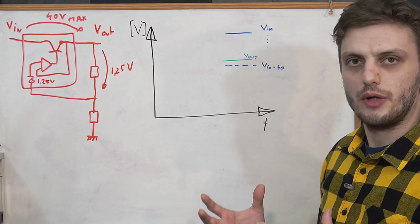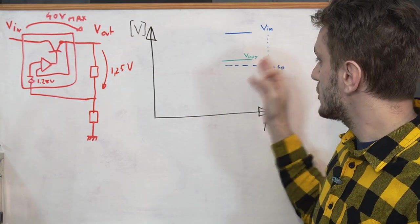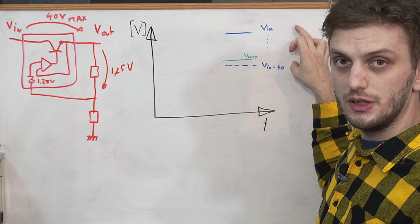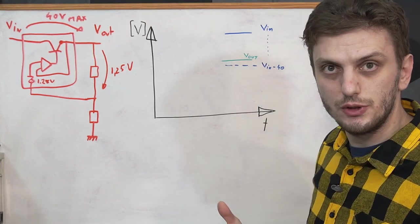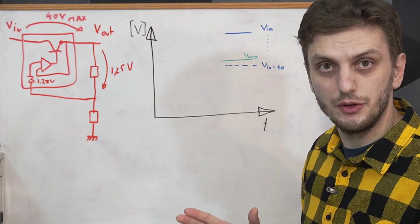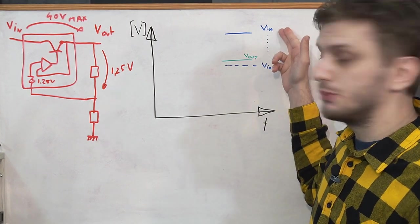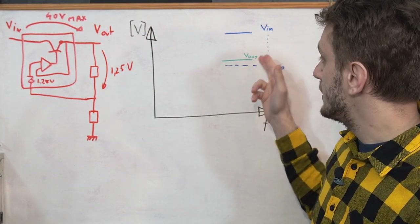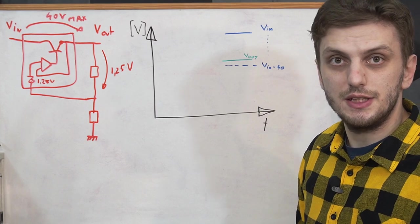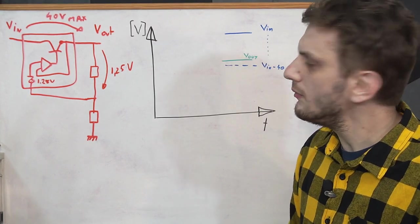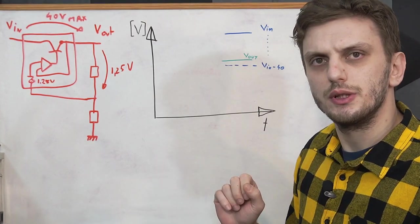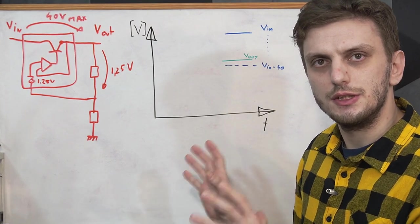So now if we go to a graph with voltages, as long as our output voltage is within a 40 volt limit of the input voltage it can be whatever value you want. So you can have an input voltage of 200 and as long as your output is above 160 you're safe.